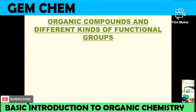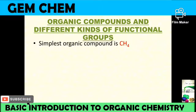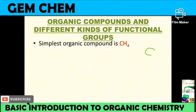Now let us come across organic compounds and different kinds of functional groups. The simplest organic compound is CH4, that is methane. It can be represented as a carbon bonded to four hydrogen atoms.